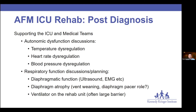One thing we've seen a lot of is autonomic dysfunction, and how this presents may be interpreted differently by initial ICU teams than how a rehab team might approach it. I'm not there to dictate how they care for the patient — they know that better than anybody and know how to keep the patient safe. But I can show examples of how temperature, heart rate, and blood pressure dysregulation can appear and how we may be able to reduce those as barriers when we get to the transition stage.